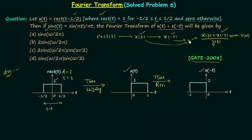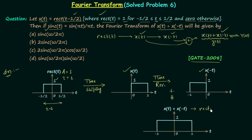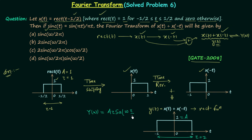The next task is to add x(t) and x(−t). After adding them, the resulting waveform x(t) + x(−t) is a rectangular function, which we have called y(t). Since y(t) is a rectangular function, we already know its Fourier transform. In this case, the amplitude A = 1 and τ = 2.